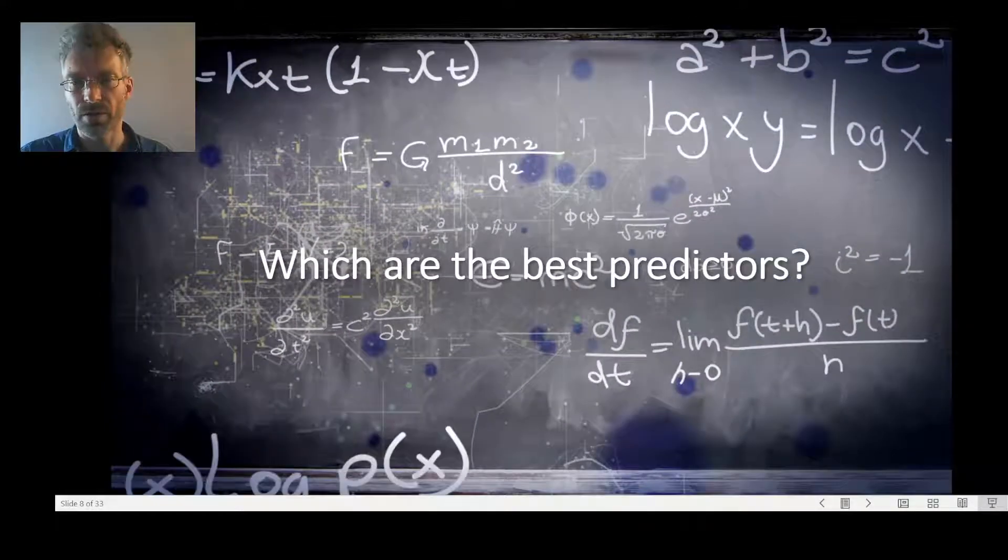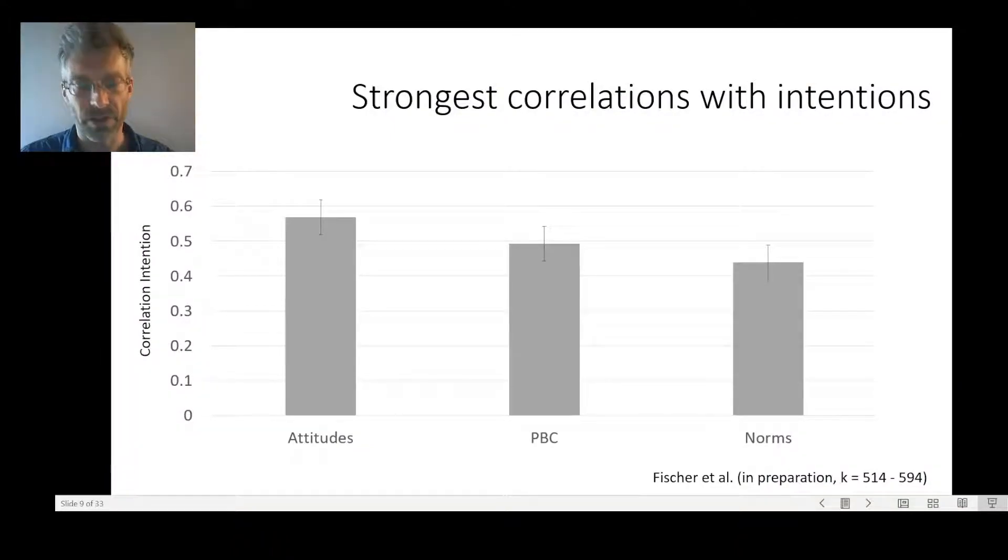The interesting question is which of these is the best predictor? Here is a study in preparation from our group where we basically pulled all the evidence using theory of planned behavior research together. It clearly shows that attitudes typically have the strongest correlation with intentions and also with behaviors, followed by perceived behavioral control. Interestingly, subjective norms do relate to intentions and behaviors, but the effect in past research is much weaker.